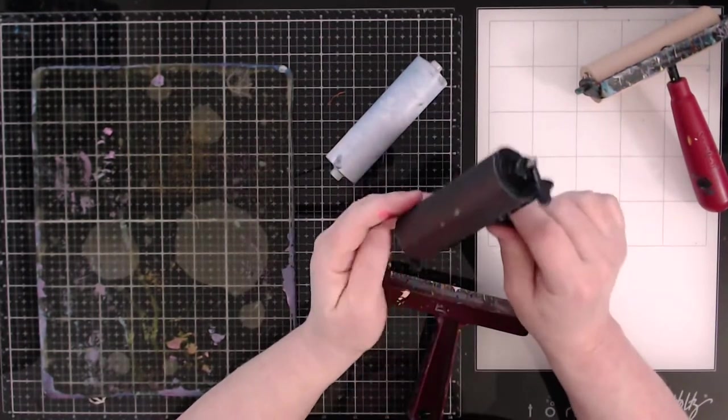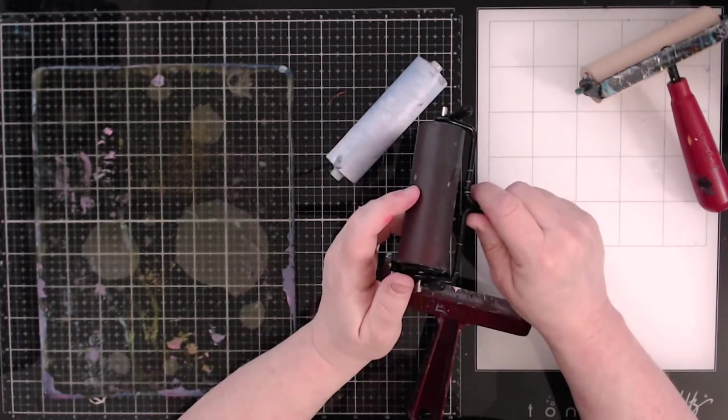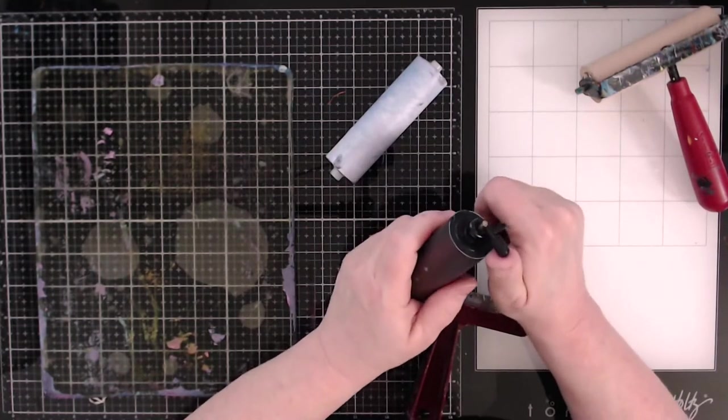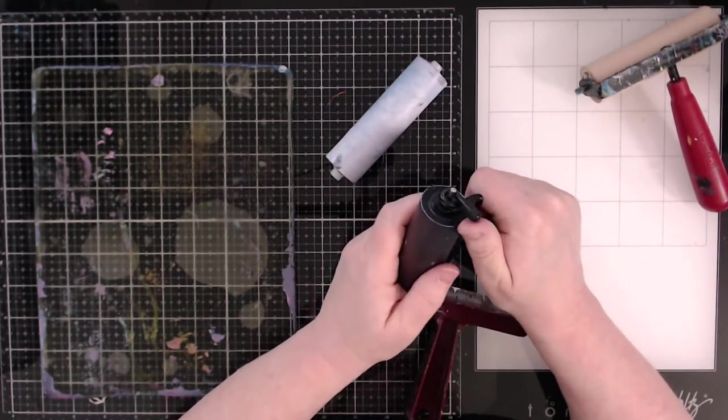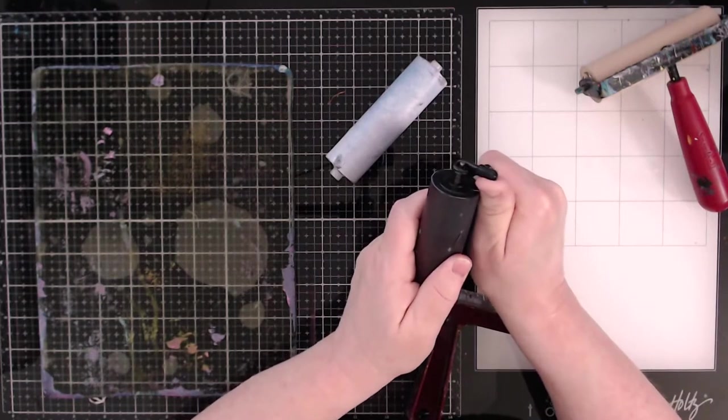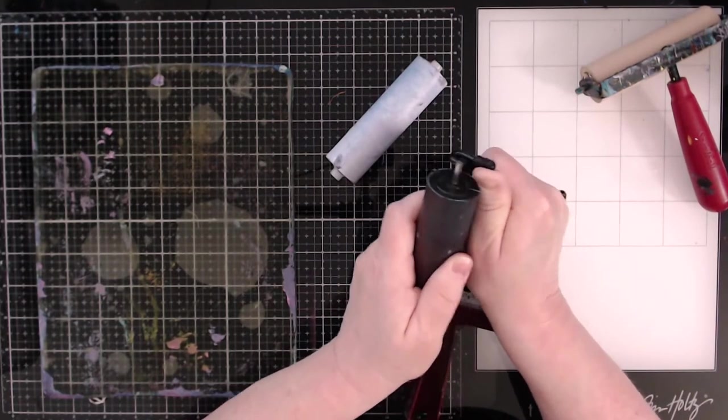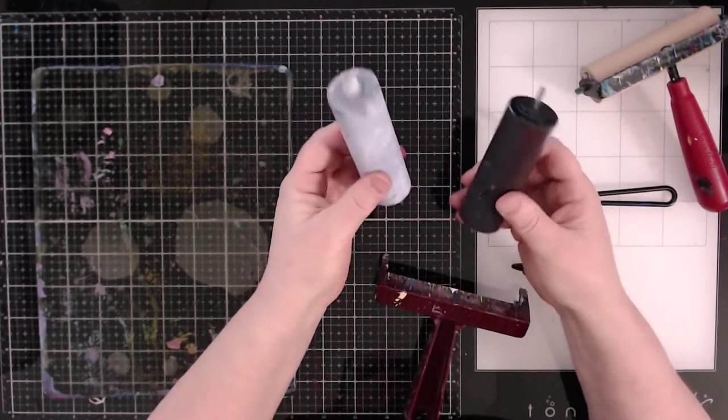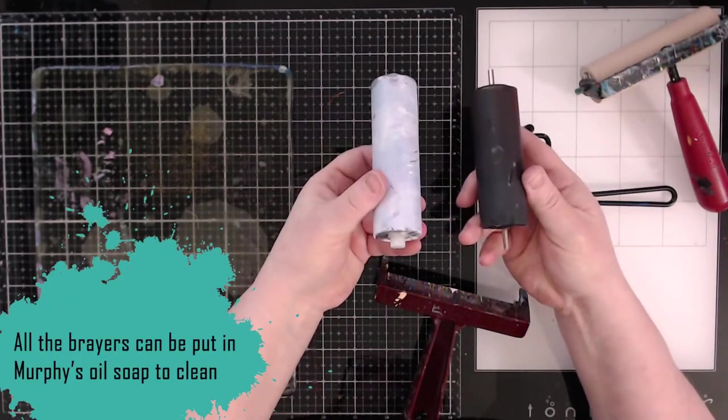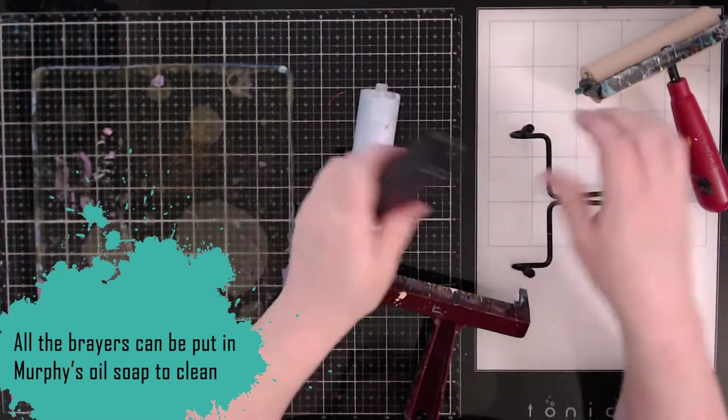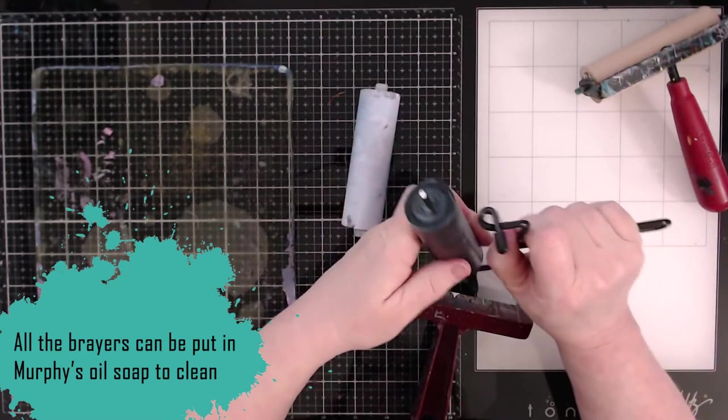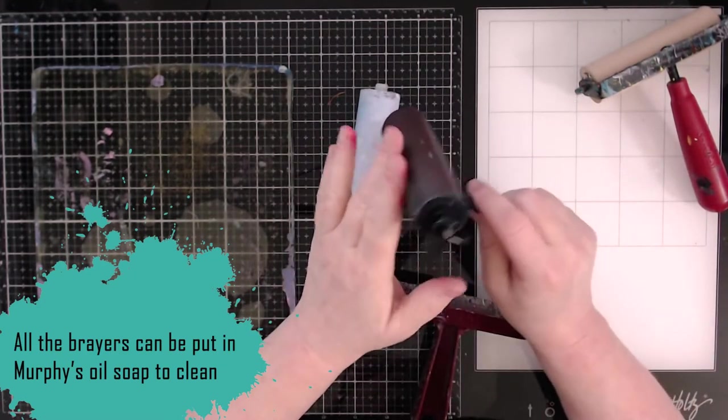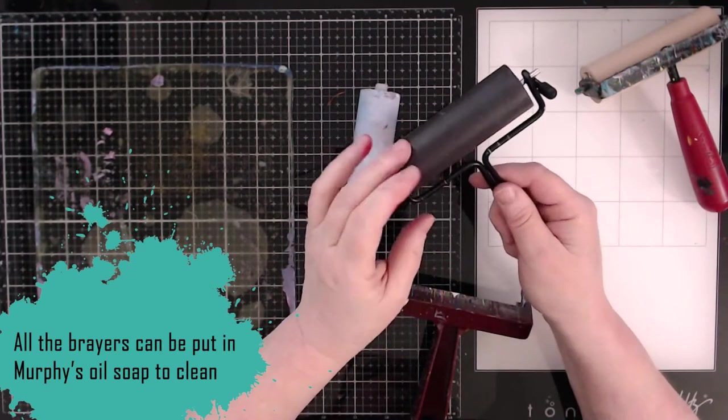And then the Tim Holtz, I really like the mechanism in which you're able to take the brayer off by pushing on the foot of the brayer and then you take it out of its housing. And so both of these, you can put them in Murphy oil soap and you can clean them. However, if you're like me and you don't clean your brayers, then this is not necessarily that big of a deal.